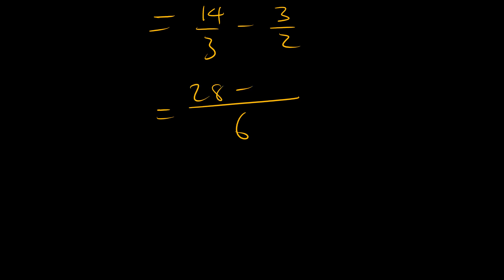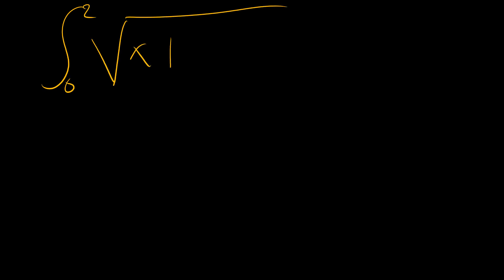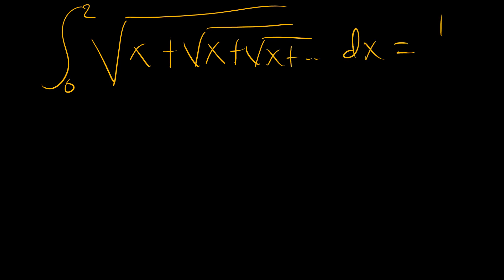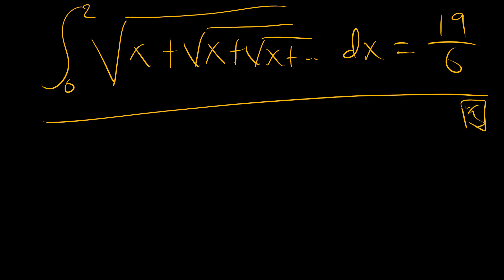This equals 28 over 6 minus 9 over 6, which is 19 over 6 — the same answer. So we have confirmed that the integral from 0 to 2 of this huge nested square root of x plus square root of x plus equals 19 over 6. And that's the answer.